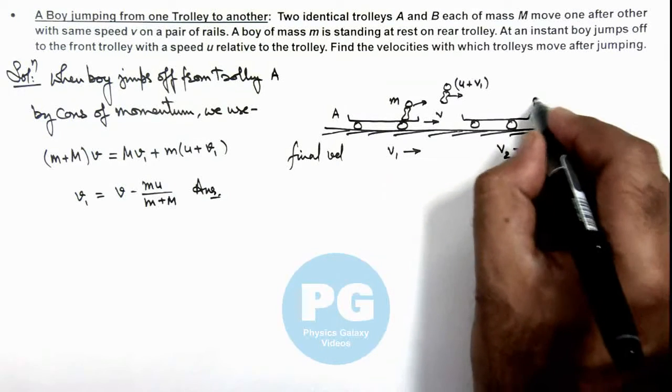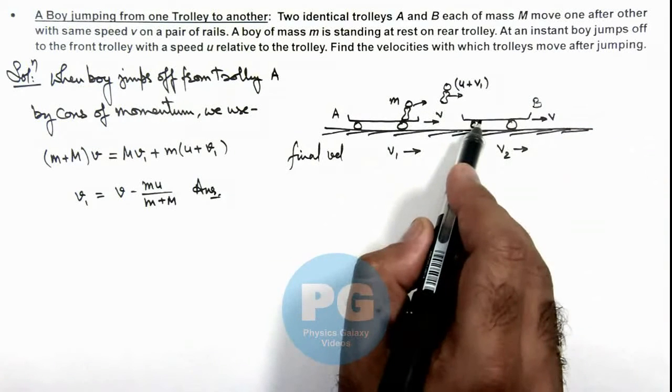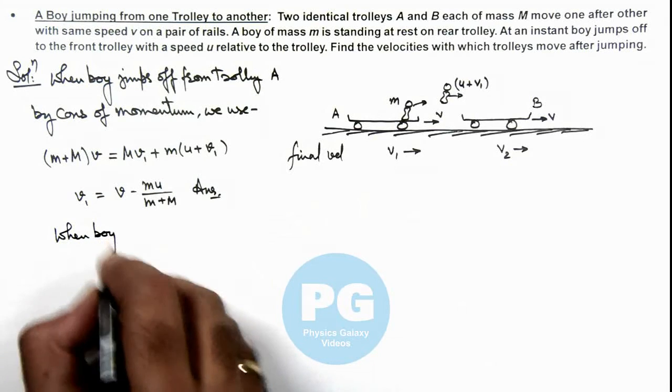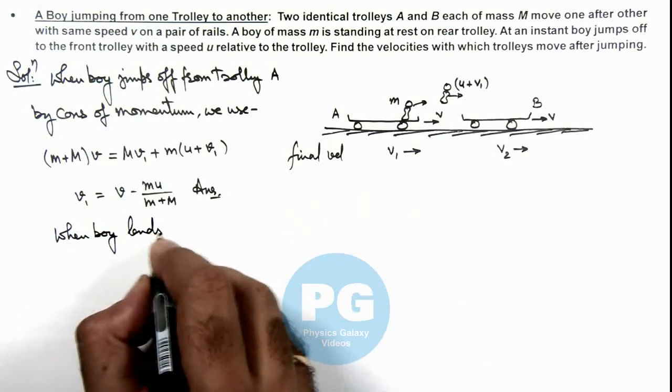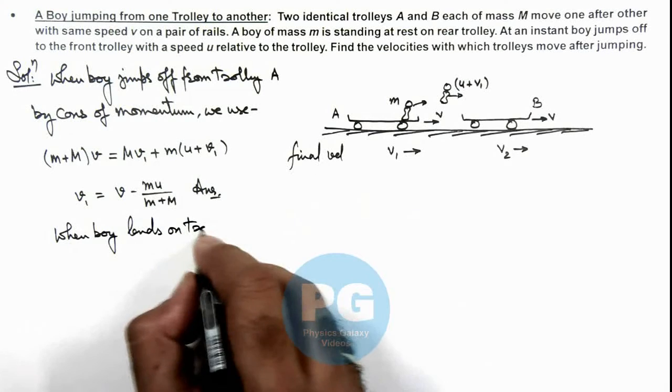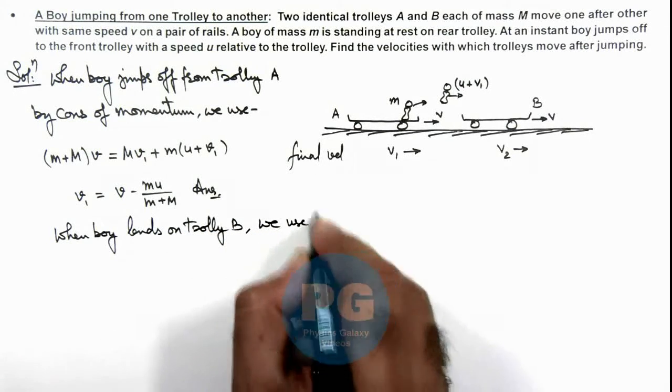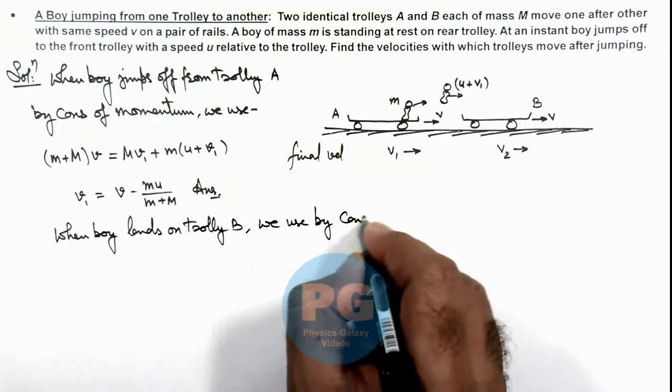If we talk about trolley B on which the boy will land, again we can write using conservation of momentum.